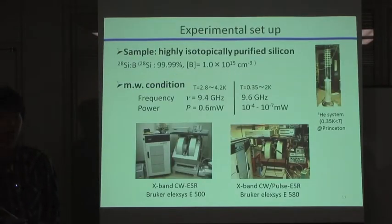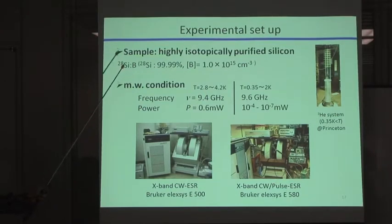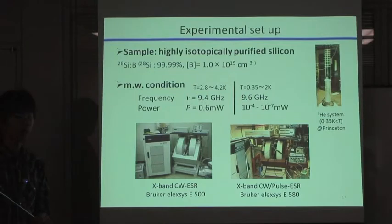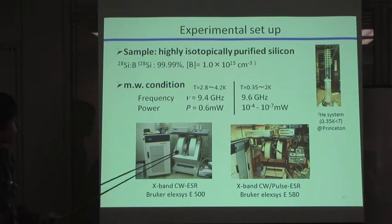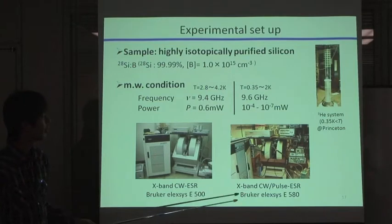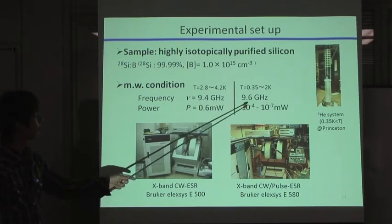To obtain more information, we prepared silicon-29 samples to see the actual nature of fine structures by reducing the inhomogeneous broadening. We employed two kinds of spectrometers in different temperature regions like this.